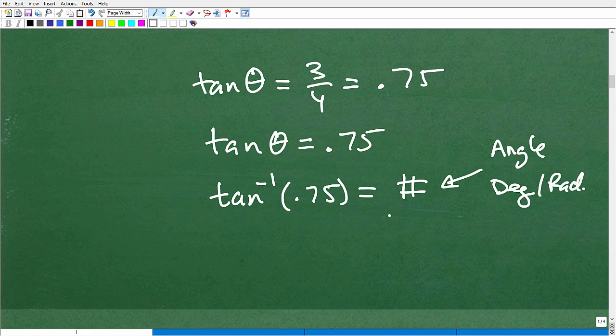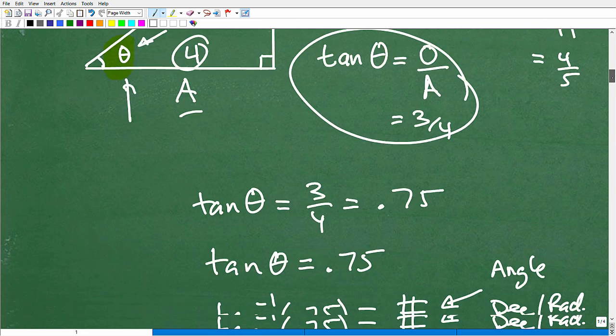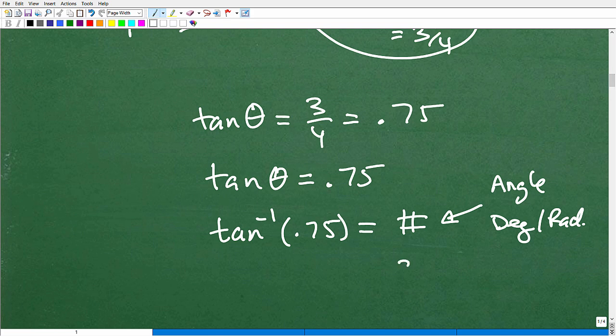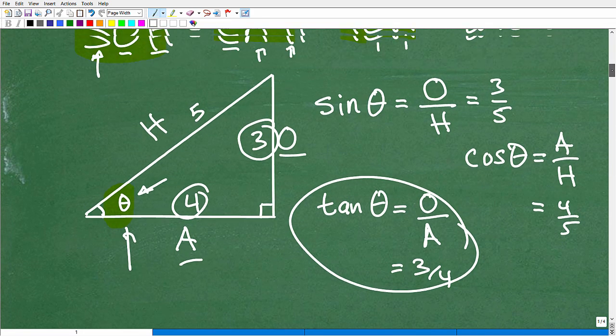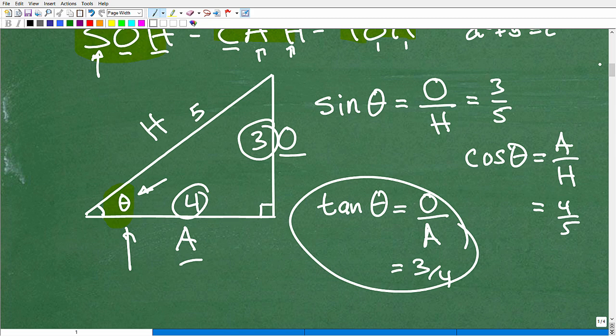But anyways, it will give you that angle, and I don't actually have my calculator with me. Should have done it, but let's say it came out to be 37 degrees, whatever it is. It will tell you that if your calculator is in degree mode.